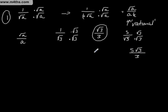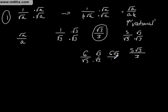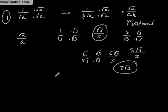What about six over root 3? Again, multiply top and bottom by root 3 and we get six root 3 over 3, which we can cancel to simply give two root 3. So that's scenario one.